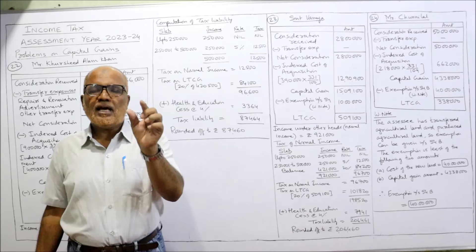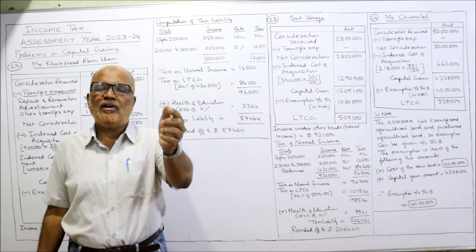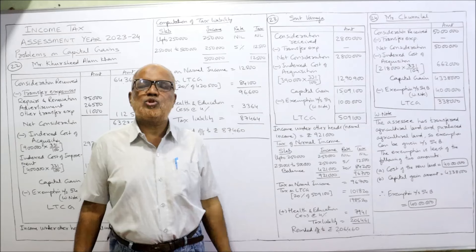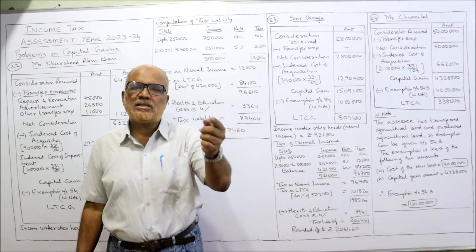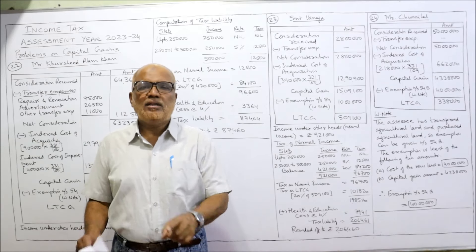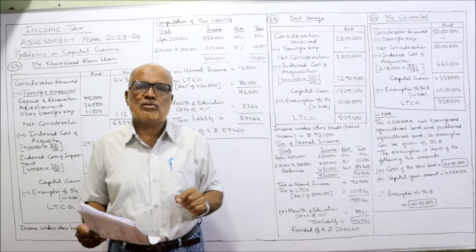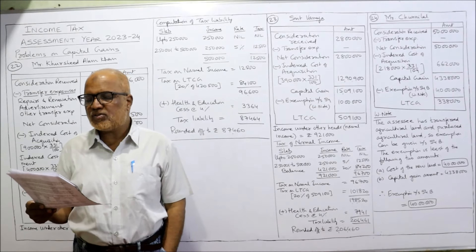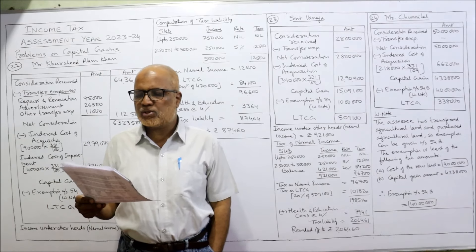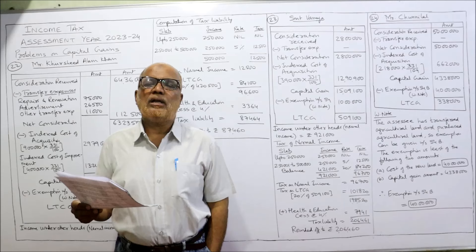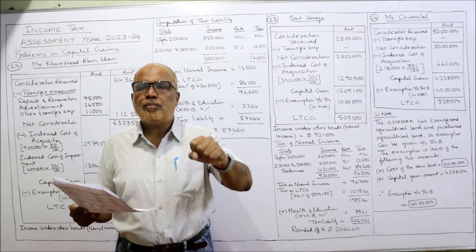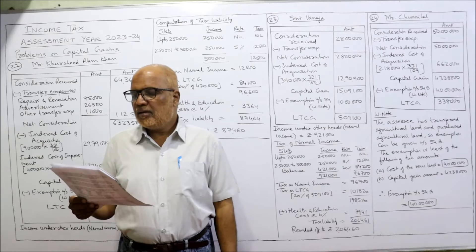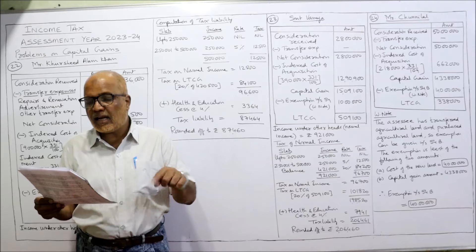After selling the house, within 2 months she started constructing a new house. Section 54 says an assessee can get exemption whether they purchase or construct a new house — in both cases exemption is allowed. This is the first problem where the assessee is constructing a new house. Amount spent on construction during the last day of the previous year was Rs. 4,00,000, and she deposited Rs. 6,00,000 in the Capital Gain Account Scheme 1988 — total Rs. 10,00,000. Calculate income from capital gain and tax liability if income from other heads is Rs. 9,21,000.